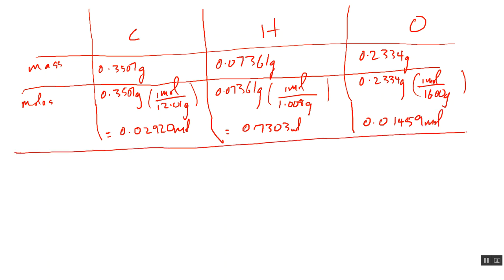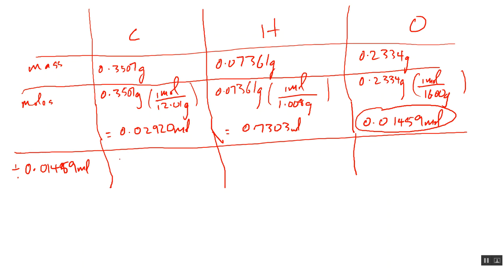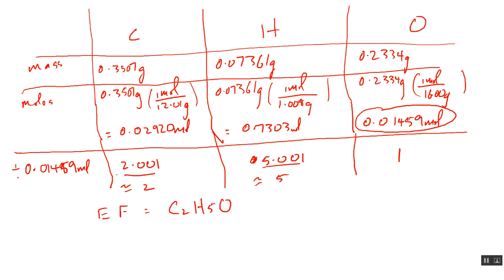The next step is to examine the three mole values and determine which is the lowest — that's oxygen at 0.01459 mol. We divide each value by that: carbon gives 2.001, hydrogen gives 5.001, and oxygen divided by itself gives 1. These are very close to integers, so we approximate: 2, 5, and 1. Therefore, the empirical formula is C₂H₅O.